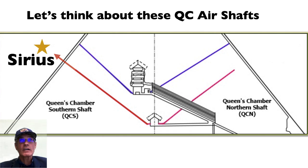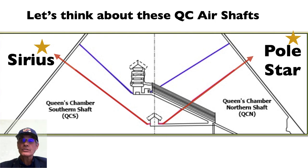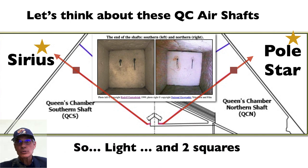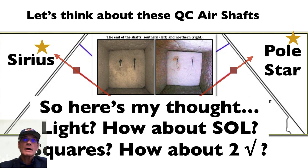So you've got the Southern Air Shaft points to the brightest star in the sky, Sirius. You've got the Northern Air Shaft that points to the pole star at the time the pyramid was built. And then you've got these squares at the end of the shaft. Two squares. So light and two squares. Because, you know, the Sirius and the pole star, we're looking for light. We want to get this pharaoh out. We want to get him to the stars. We want to get him to light. So here's my thought. Light. How about the speed of light? Squares. How about two square roots?